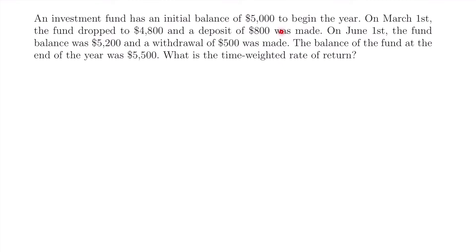Welcome back. Let's start with this example. We have that an investment fund has an initial balance of $5,000 to begin the year. On March 1st, the fund dropped to $4,800 and a deposit of $800 was made. On June 1st, the fund balance was $5,200 and a withdrawal of $500 was made. The balance of the fund at the end of the year was $5,500. What is the time-weighted rate of return?